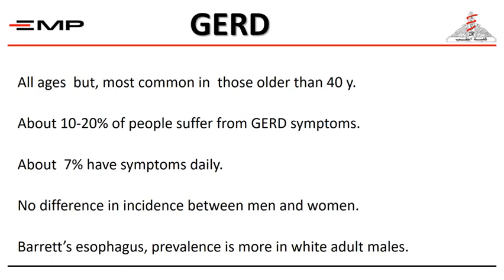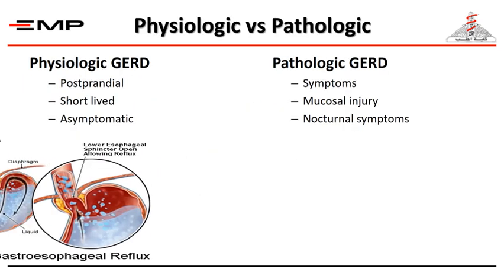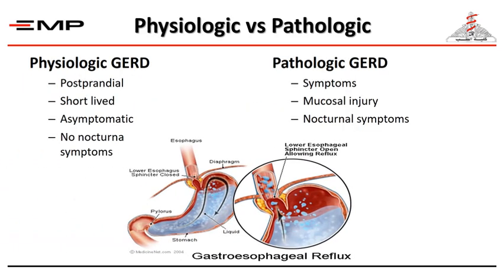The first disease is gastroesophageal reflux disease. This disease affects all ages but is most common after 40. About 10 to 20 percent of people suffer from reflux symptoms, and up to 7 percent of any population will have daily symptoms. There is no difference between the incidence in male and female. One very important complication is Barrett's esophagus, the prevalence of which is more common in white adult males.